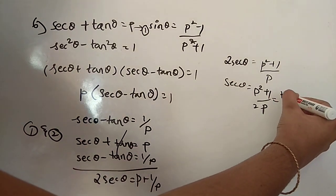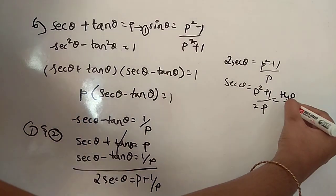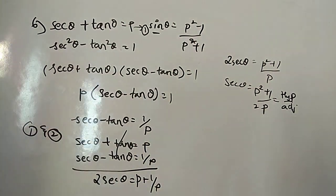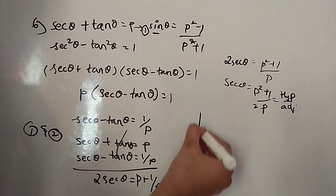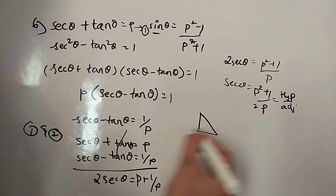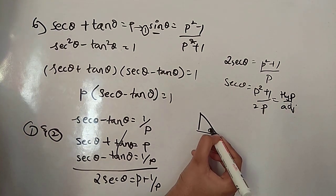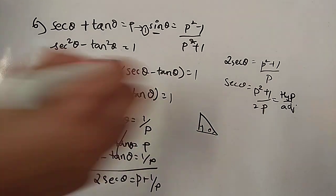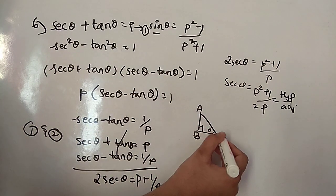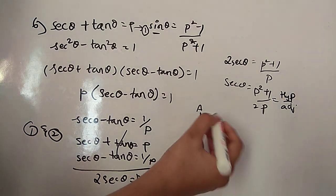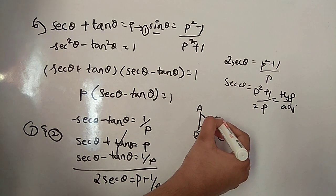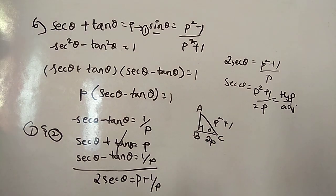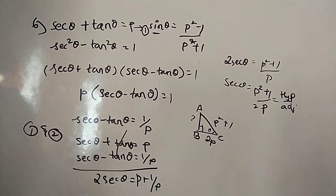Secant theta is hypotenuse over adjacent, so hypotenuse equals p squared plus 1 and adjacent equals 2p. Using the Pythagorean theorem to find the opposite side: (p squared plus 1) squared equals opposite squared plus (2p) squared. Expanding: p⁴ plus 2p² plus 1 equals opposite squared plus 4p squared.